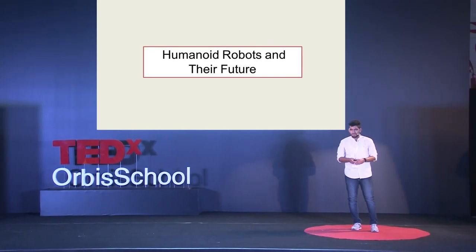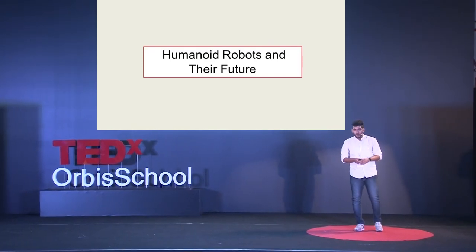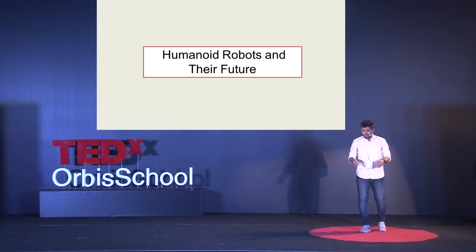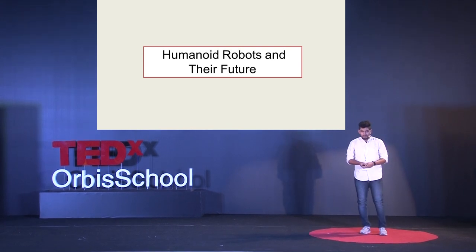A very good evening, all of you. Can you all have a look to your left and to your right? What do you all see? Our fellow human beings. Because guess what? That might be a deception to your eyes, because today there exist robots that look similarly to human beings. We call these robots humanoids.